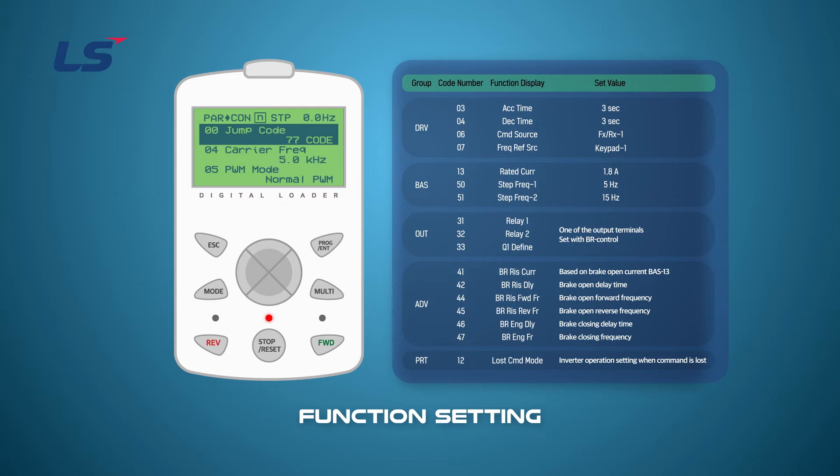The BR control for the brake control of the motor is set at one relay. If the BR control is not set in the multi-function output relay, it will not be visible in the AV group.